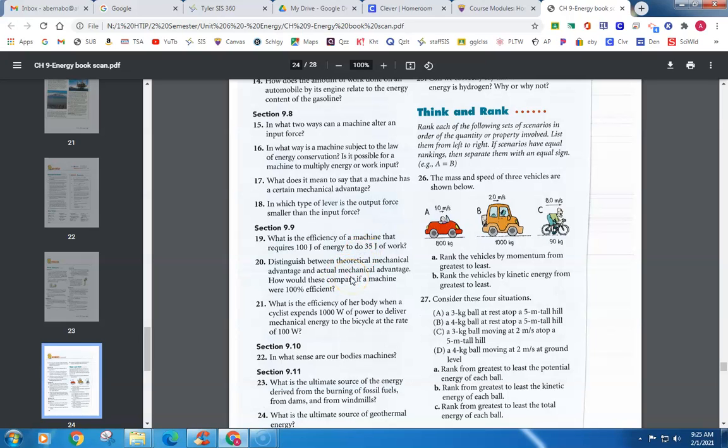Distinguish between theoretical mechanical advantage, which I usually call ideal mechanical advantage, and actual mechanical advantage. How would these compare if the machine were 100% efficient? Well, theoretical mechanical advantage, or ideal mechanical advantage, is if there's no friction, if there's no energy loss—that's what you should theoretically get. Actual mechanical advantage is with friction. And the second part of the question is, if the machine were 100% efficient, these would both be the same.